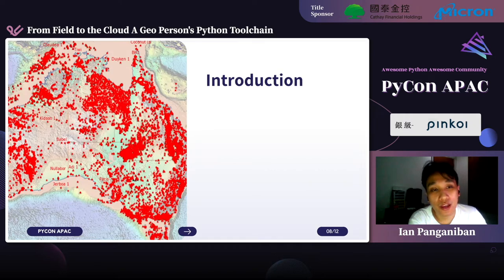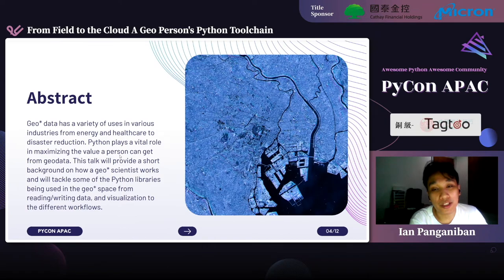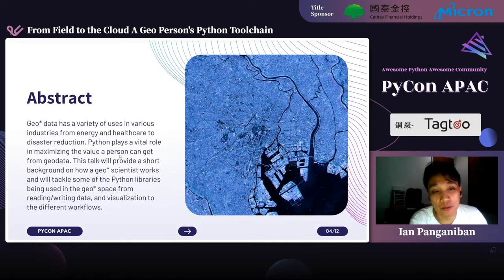As an introduction, on the left-hand side you can see the location of all oil wells drilled in Australia — most of which are already dried up from previous exploration and extraction. The topic of this presentation is that geospatial applications are now penetrating throughout different industries, from energy and healthcare to disaster reduction.